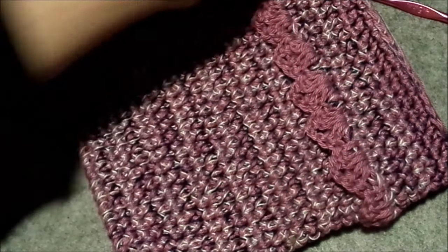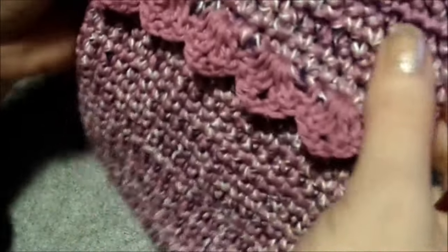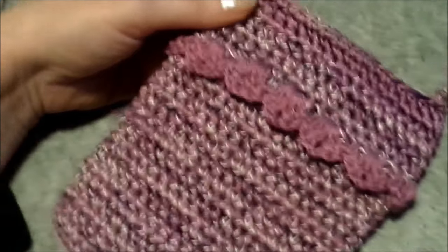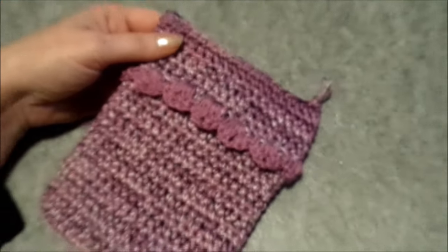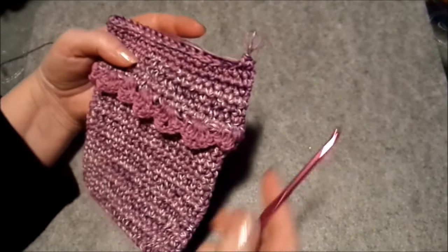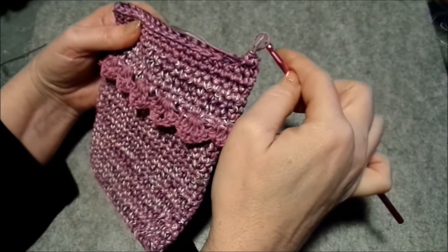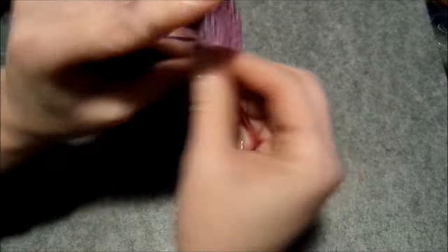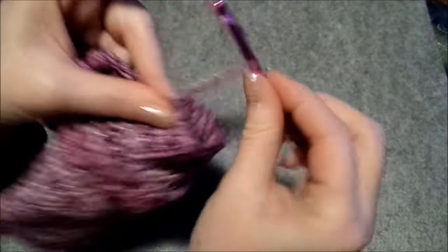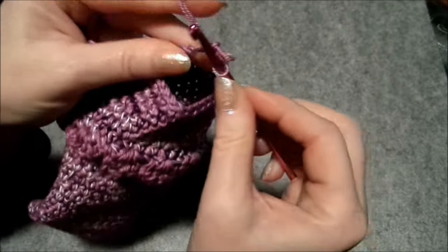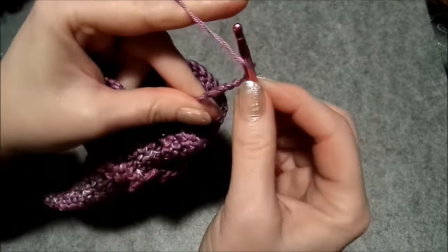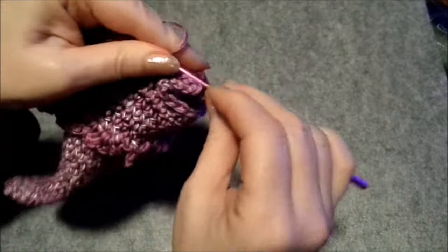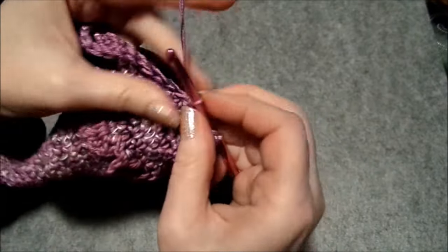So, jetzt habe ich noch einen Rand oben angehäkelt. Noch zwei, drei Reihen. Und habe den weißen Faden einfach mal weggelassen. Und jetzt kann man noch einen Zierrand machen. Brauchen wir aber nicht. Eine Öse. Einen Zierrand. Da habe ich euch verschiedene aufgeschrieben, was man machen kann. Wie gesagt, Öse, wenn man möchte, 10, 12 Luftmaschen. Und das dann mit einer festen Masche zu einer Öse ziehen.